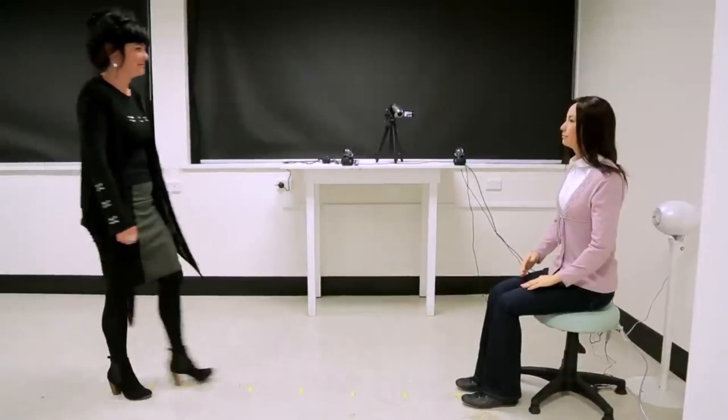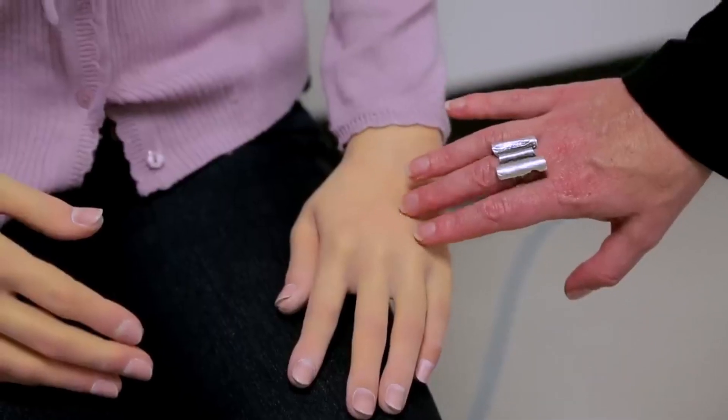Even though the Geminoid F is supposed to behave like a human, she is unable to walk on her own, and must be wheeled around instead. Her rubber skin and womanly features give her a lovely image, however.